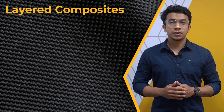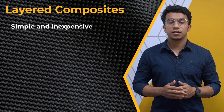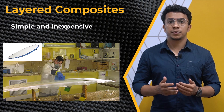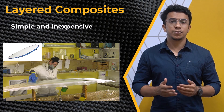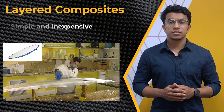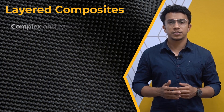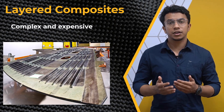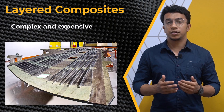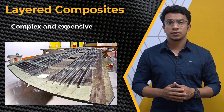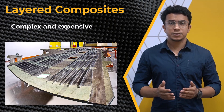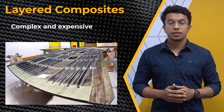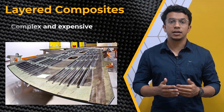Layered composites can be fairly simple and inexpensive, like surfboards made of fiberglass and foam. On the other hand, they can also be very complex and expensive, such as those used in critical applications like airplane wings. In these cases, the placement and orientation of every ply are critical and the manufacturing process is highly controlled.